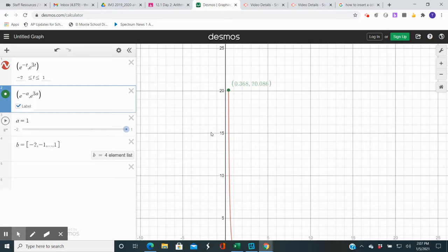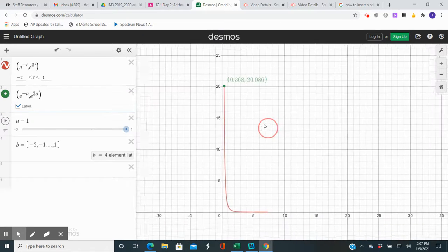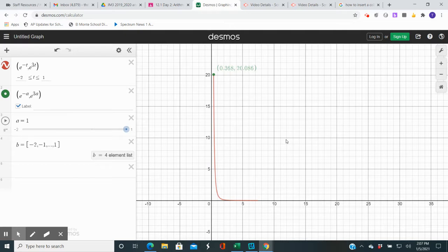I would like to have a slider, and that would allow you to see the graph being traced from t is equal to whatever you choose it to be. Let's go from t is equal to negative 2 to t is equal to positive 1.